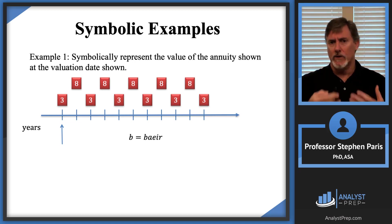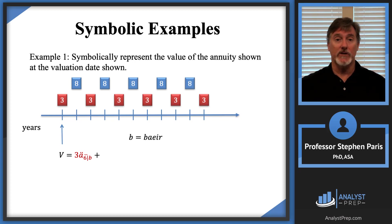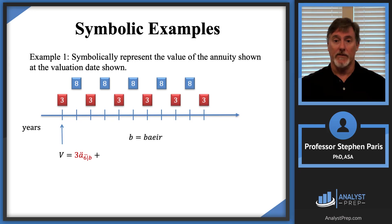To illustrate, I'll change the color of the payments of eight to blue. Now let's focus on the payments in red — the payments of three. That's easy to value at the valuation date because I have a single symbol for it. There are six payments of three, they're biannual payments, and this is at the time of the first payment. So the value of those payments of three at that valuation date is 3 times A-double-dot angle 6 at rate B. That rate B is important because it's a biannual effective interest rate, confirming that those are biannual payments.